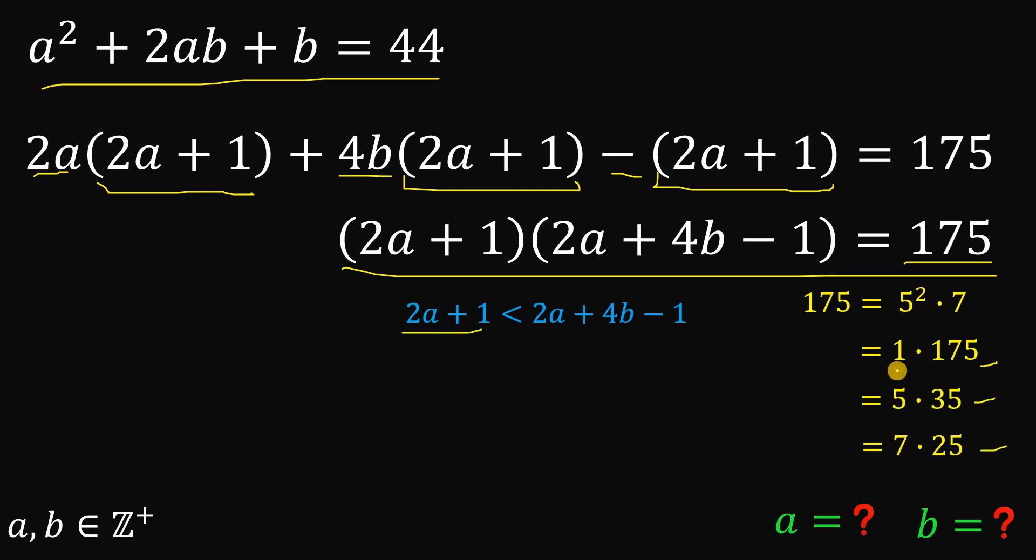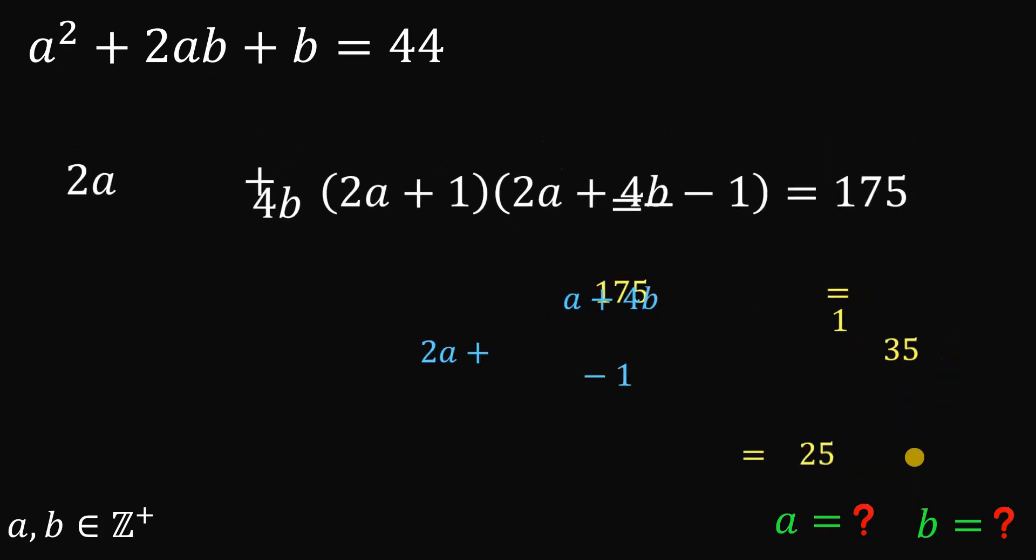So first case, 2a plus 1 is equivalent to 1 and 2a plus 4b minus 1 equals 175 and so on and so forth. 2a plus 1 equals 5. 2a plus 1 equals 7. And the other is 35 and 25 respectively. So now we have three possible cases.